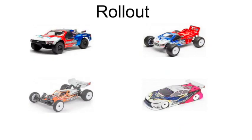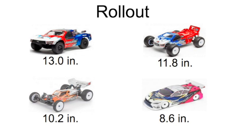There are some other things that come into play with gear ratios, one being rollout, which considers the size of the tires. Every time the drive wheels turn one full revolution, the amount of distance covered makes a difference in the amount of work — the farther you move, the more work you have to do. For example, a short course truck moves about 13 inches every time the tires go around once, a stadium truck about 11.8 inches, a buggy about 10.2 inches, and a touring car about 8.6 inches. Comparing the short course truck to the touring car, the short course has to cover a much longer distance per wheel revolution, so it's going to need a much lower gear ratio than the touring car.